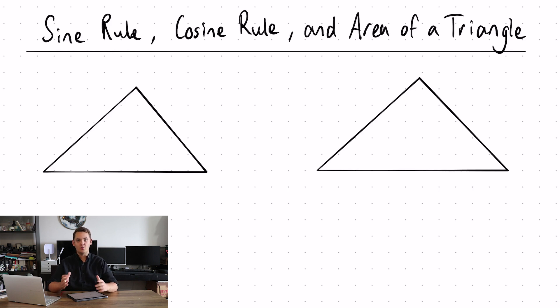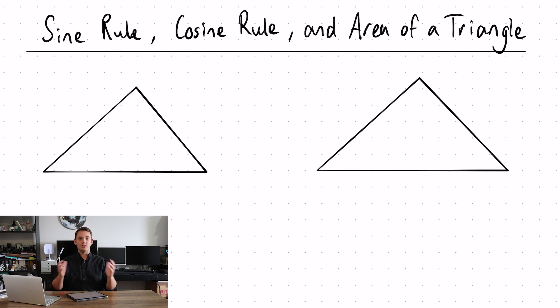And then we're going to be mixing the sine rule, cosine rule and finding the area of the triangle together so that we can get a complete look at one of these questions.